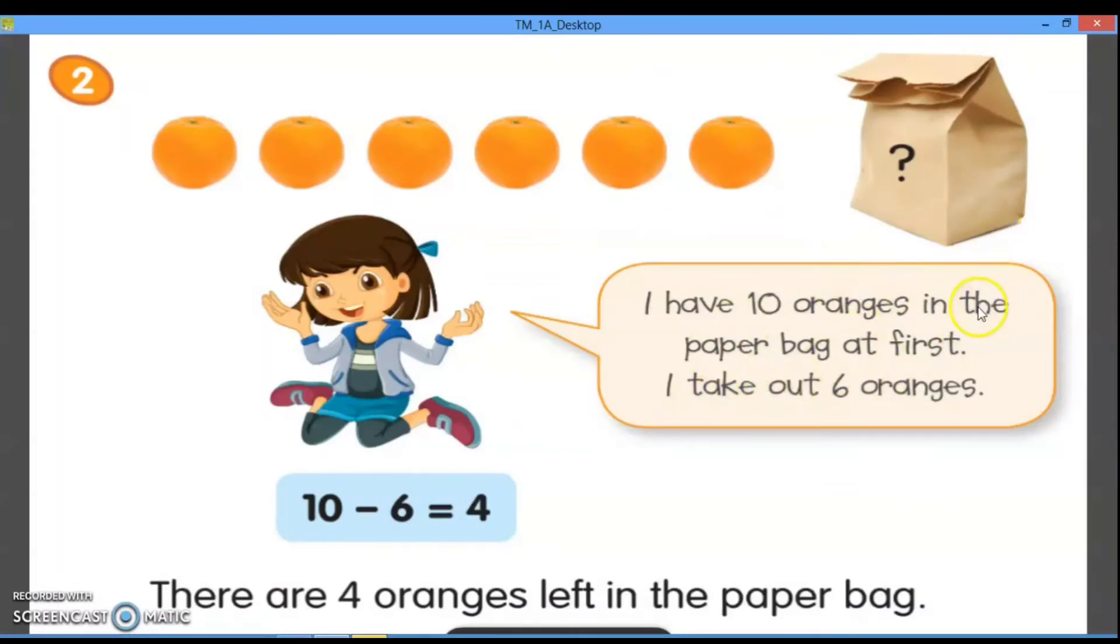Kemudian, Janice mengambil enam jeruk. Maka, ada berapa jeruk yang ada di paper bag ini? Maka, jika ditulis dengan kalimat matematika, akan seperti ini. Sepuluh dikurang enam. Maka, hasilnya empat.